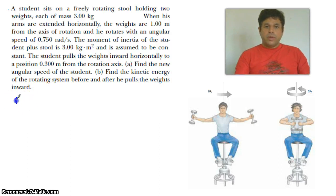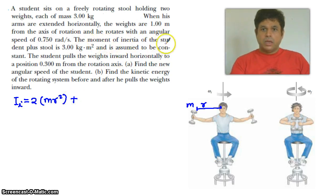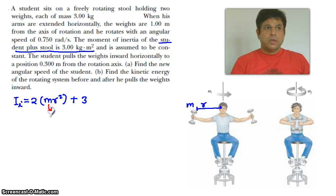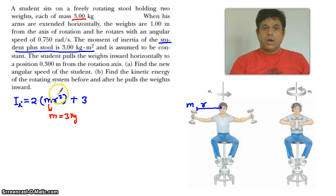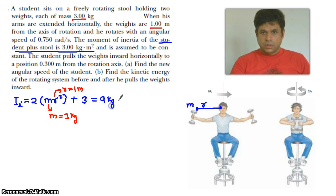First of all, we find the initial moment of inertia. The formula is 2mr² plus the student-plus-stool moment of inertia, which is 3 kg·m². The mass value is m = 3 kg. So the initial moment of inertia evaluates to 2(3)(1)² + 3 = 9 kg·m².